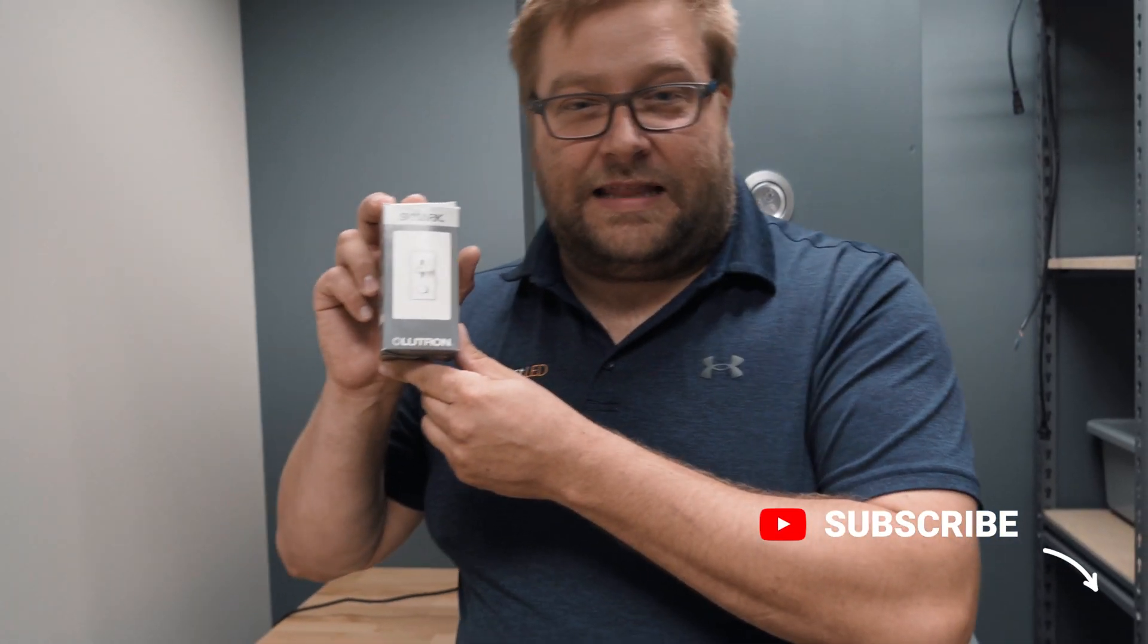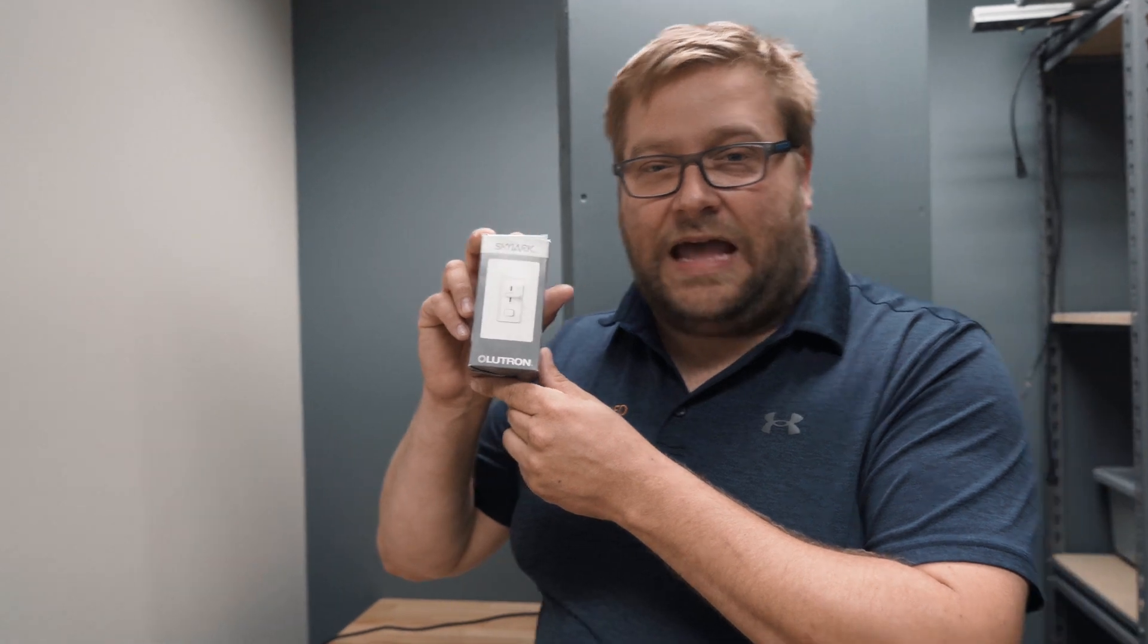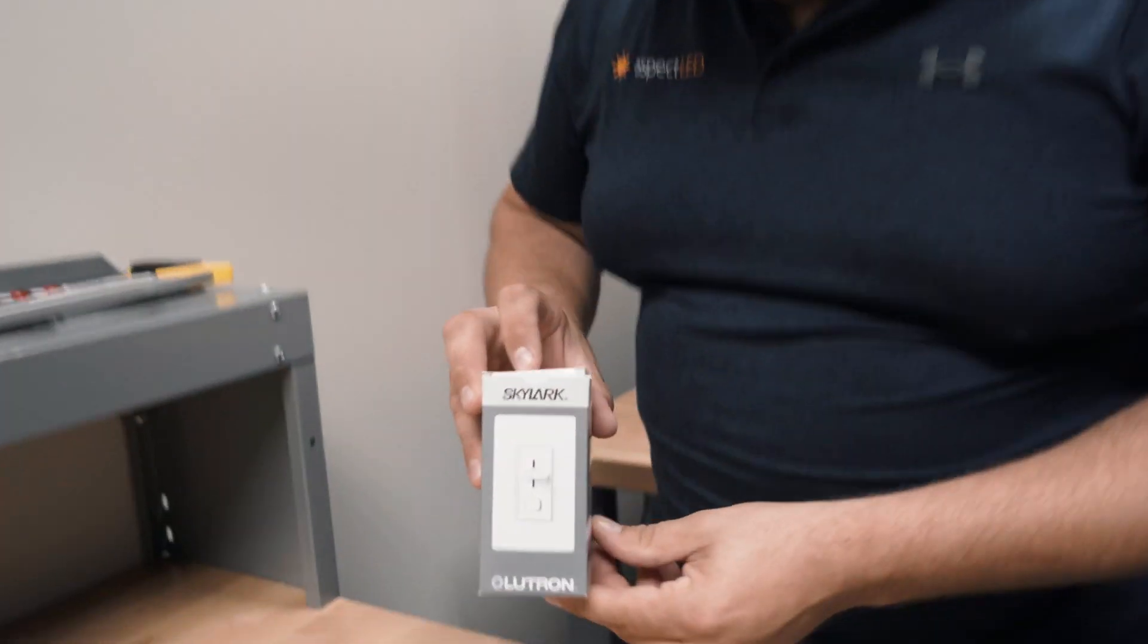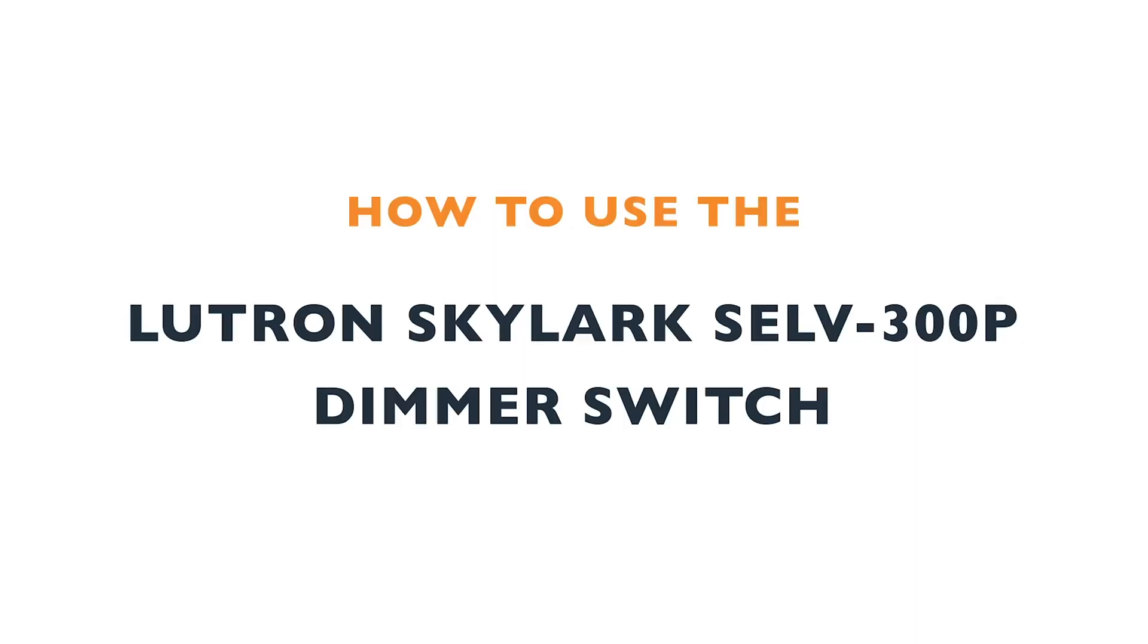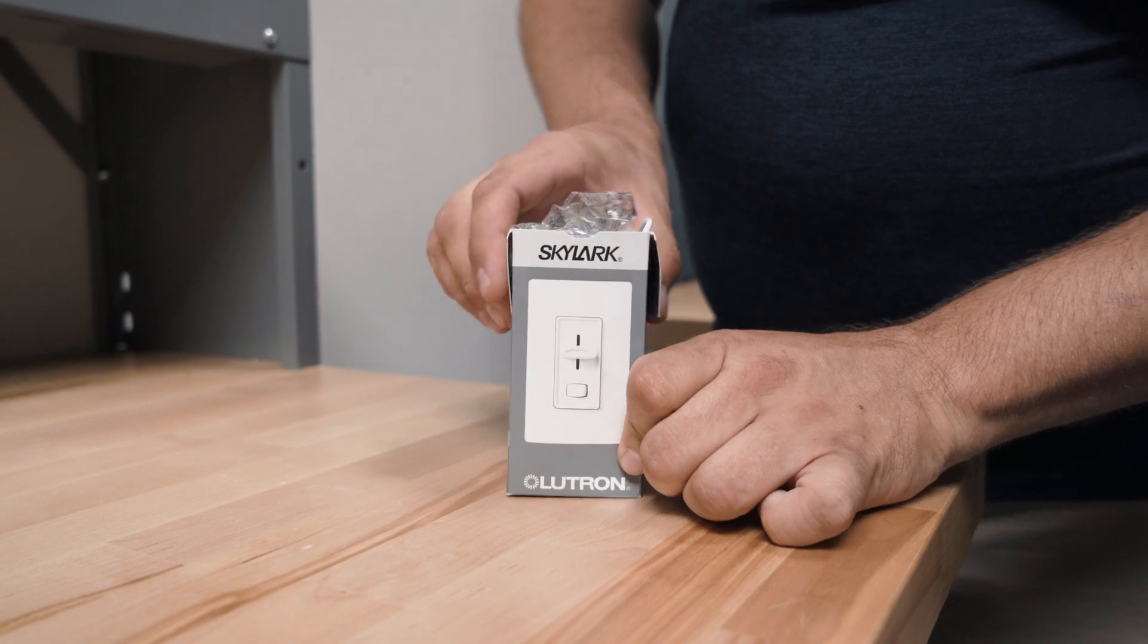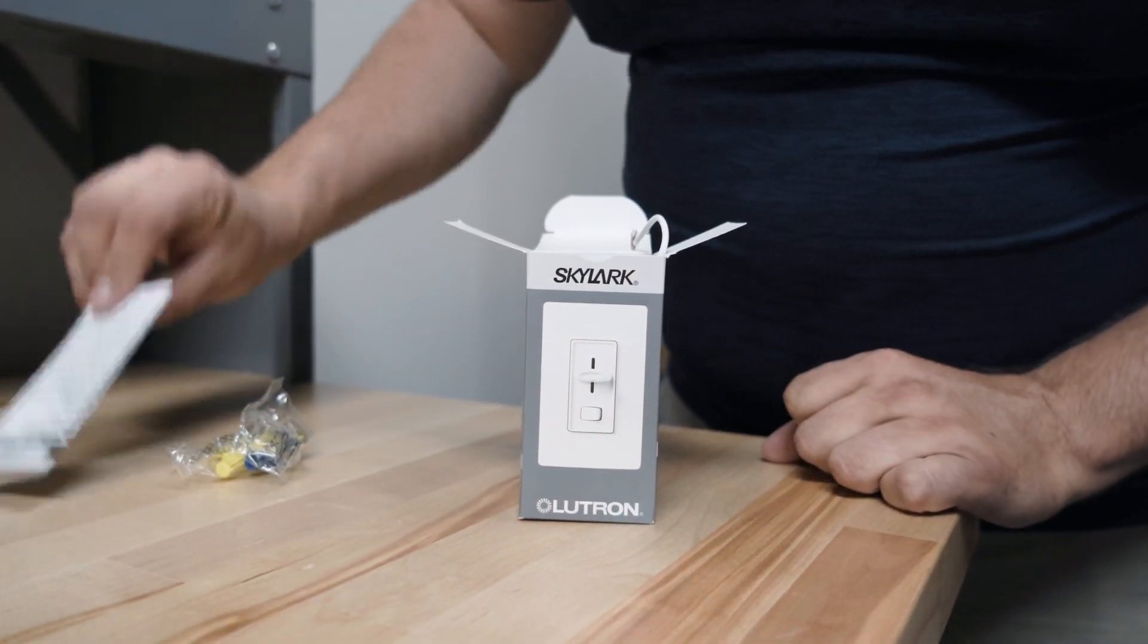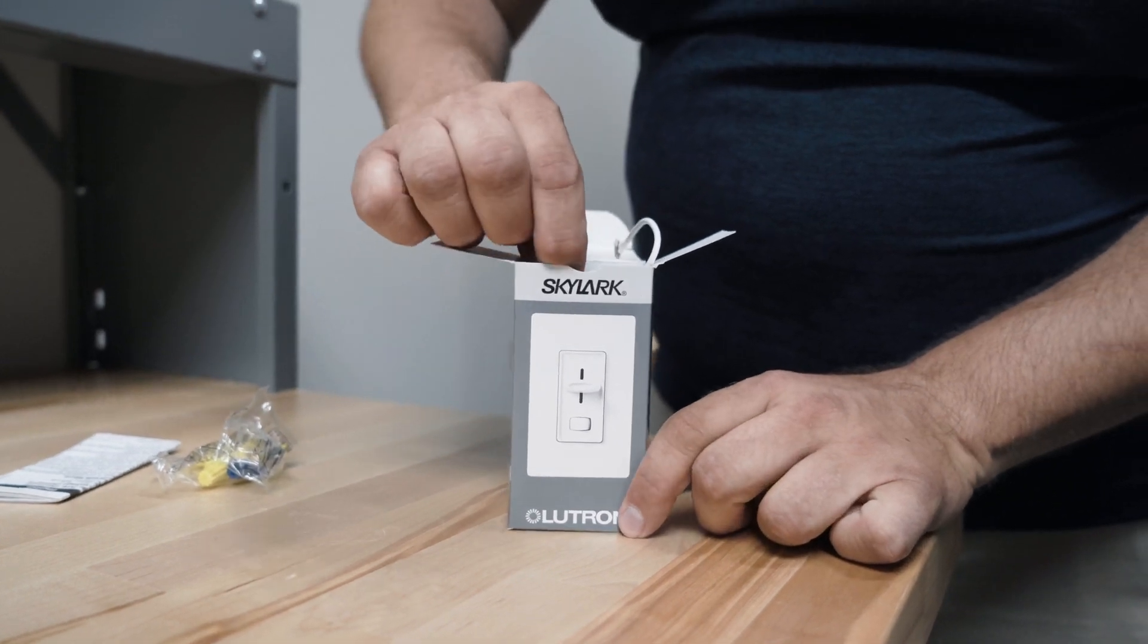Hey everybody, it's Marty from Aspect LED. Today we're going to look at the Skylark SELV300P from Lutron. Let's go ahead and unbox this. It comes with wire nuts for connections, a handy instruction manual, and the dimmer itself.